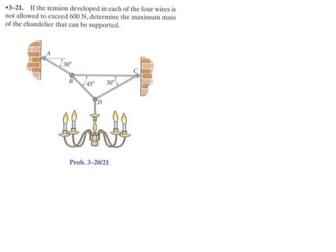So it says here you've got this chandelier setup. If the tension developed in each of the four wires is not allowed to exceed 600 Newtons, determine the maximum mass of the chandelier that can be supported.